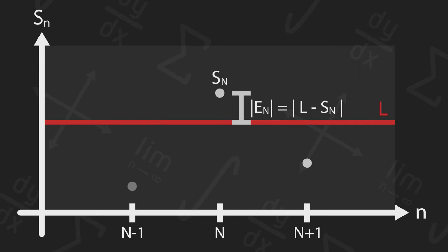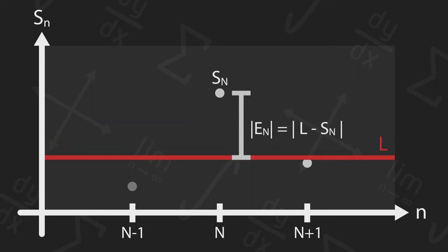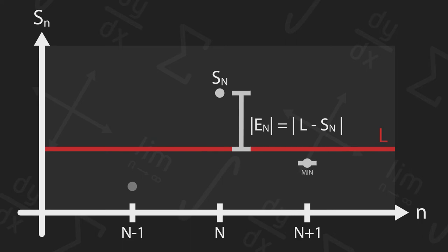Remember, that since L must be between any two sequential partial sums, the farthest that L can be vertically from any point on our graph is at the point that comes right after. So, we know our error cannot be greater than the distance between S sub n and S sub n plus 1.